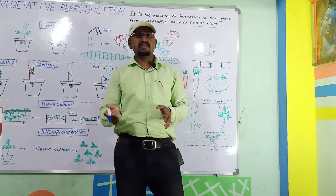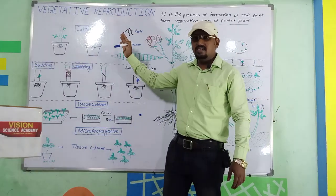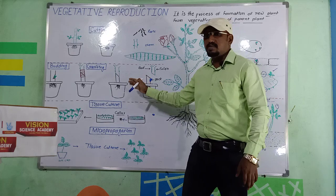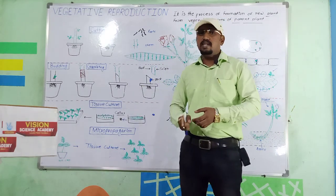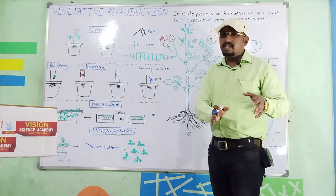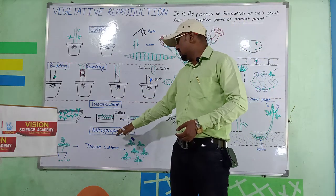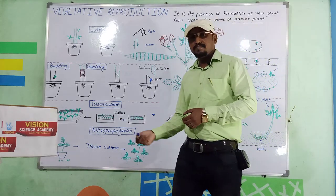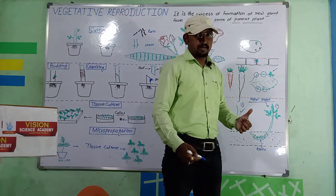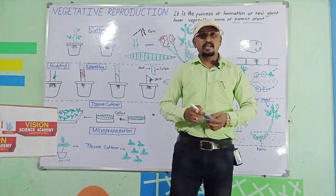Simply, vegetative propagation uses root, stem, and leaves to grow new plants. We grow the cutting part of the plant, or use grafting, tissue culture, or layering. These are all methods of vegetative propagation. We discussed root, stem, leaves, cutting, grafting, tissue culture, micropropagation, and layering. Thank you, we will stop here.